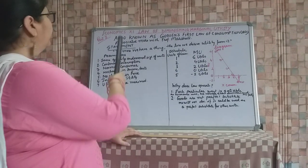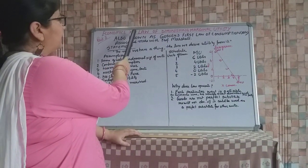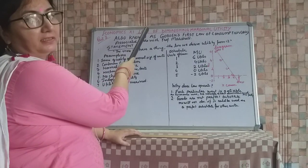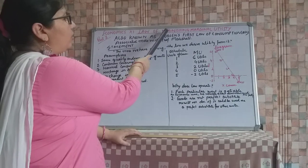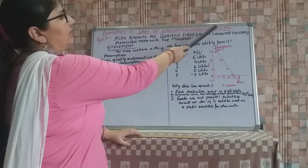Good morning students. In economics class 11, under the consumer equilibrium, we are now doing the law of diminishing marginal utility.